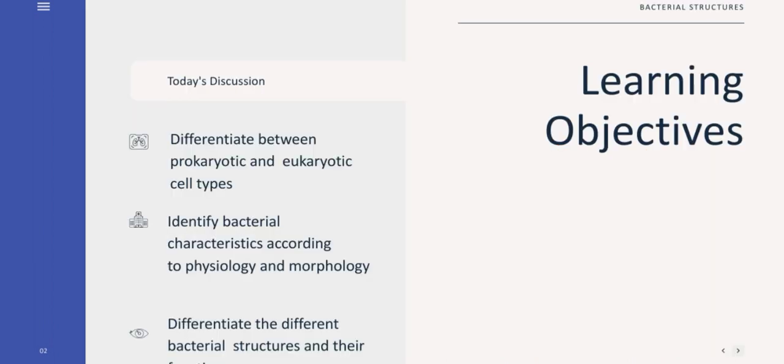So the learning objectives for this video are the following: first is to differentiate between prokaryotic and eukaryotic cell types, next is to identify bacterial characteristics according to physiology and morphology, and lastly, differentiate the different bacterial structures and their functions.